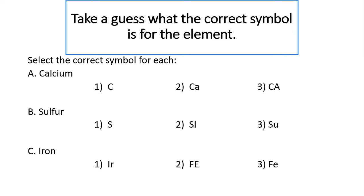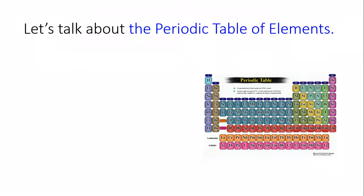Take a guess what is the correct symbol for the element. Select the correct symbol for each. Calcium. Looks like it's 2. It is. Sulfur. 1. Iron. You've seen this one before on earlier slides. The correct answer here is 3, Fe.